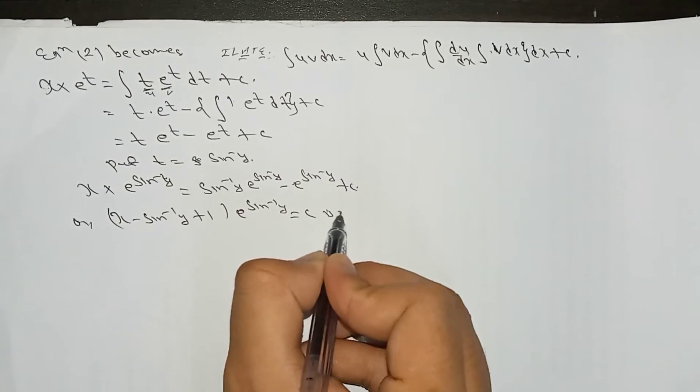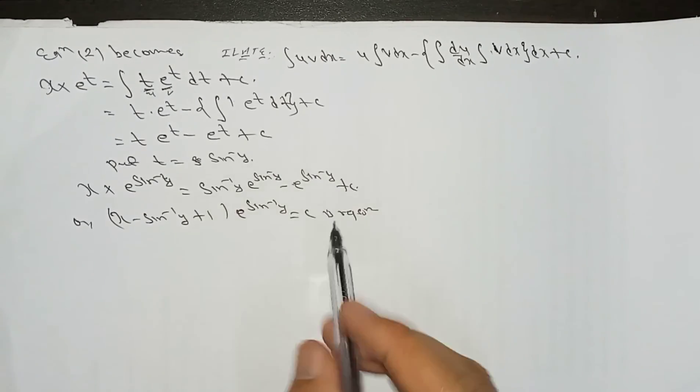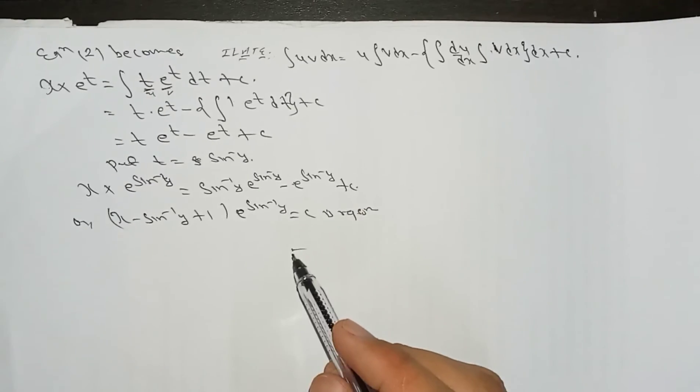This can be simplified as x = sin⁻¹y − 1 + c · e^(−sin⁻¹y), or equivalently x − (sin⁻¹y + 1) = c. This is the required solution.